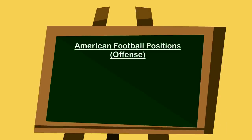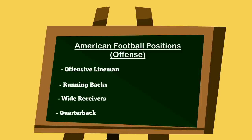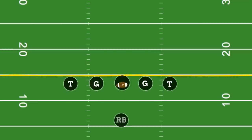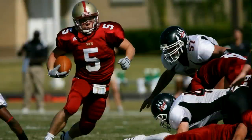That about wraps it up for the offensive linemen. If there are any questions, let us know in the comment section below. The next position group is the running backs, who will be running the football after the ball is handed off from the quarterback. The running back will typically line up behind the quarterback about five yards, or in the spread offense they'll line up next to the quarterback — either way, within distance to take a handoff and run upfield successfully.